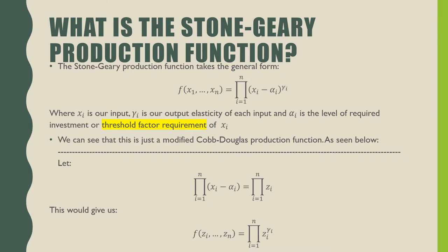The Stone-Geary production function takes the general form of f(x₁,...,xₙ) equals the product of (xᵢ - αᵢ) raised to γᵢ, where i goes from 1 to n. Here, xᵢ is our input, γᵢ is our output elasticity for each input, and αᵢ is the level of required investment or threshold factor requirement for each input xᵢ. We can see that this is just a modification of the Cobb-Douglas production function, as seen below.